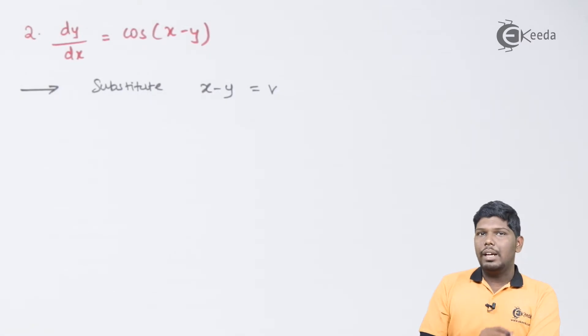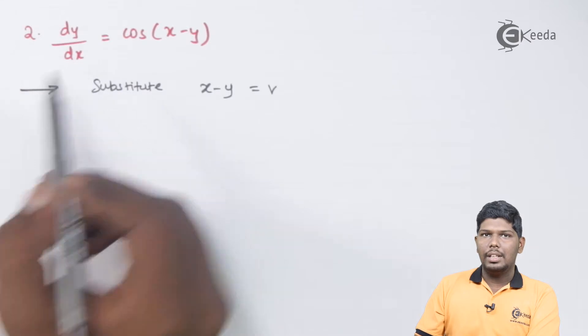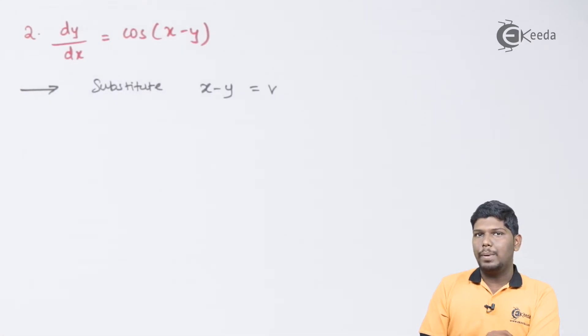After that, we need to check whether we have dy by dx or dv by dx. Here we have dy by dx, so we will differentiate it with respect to x.